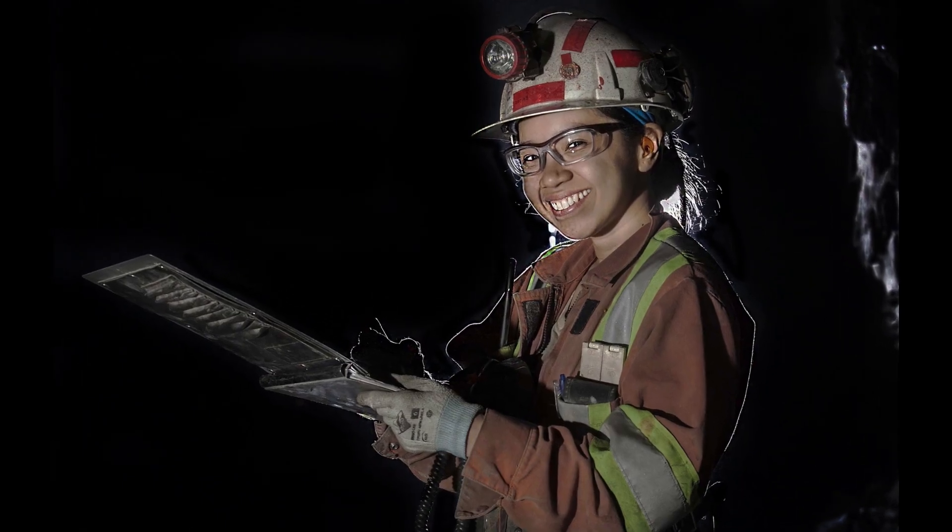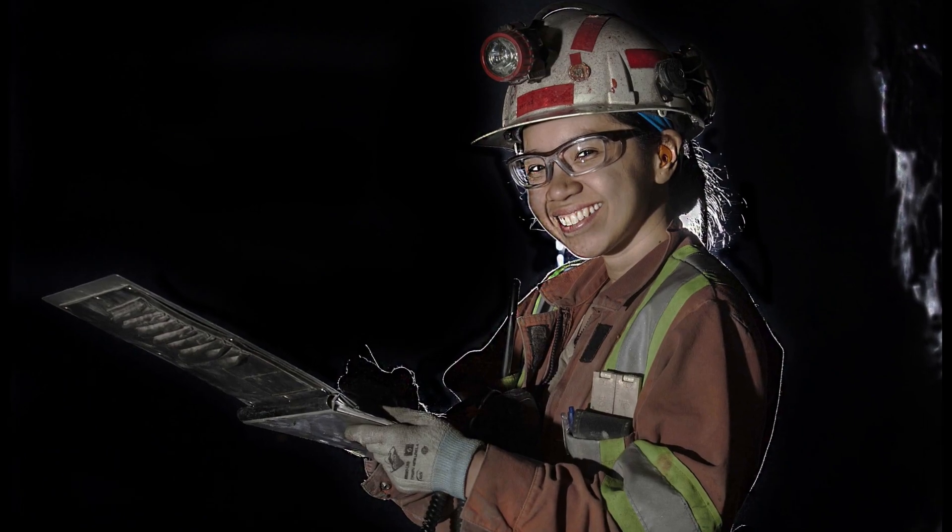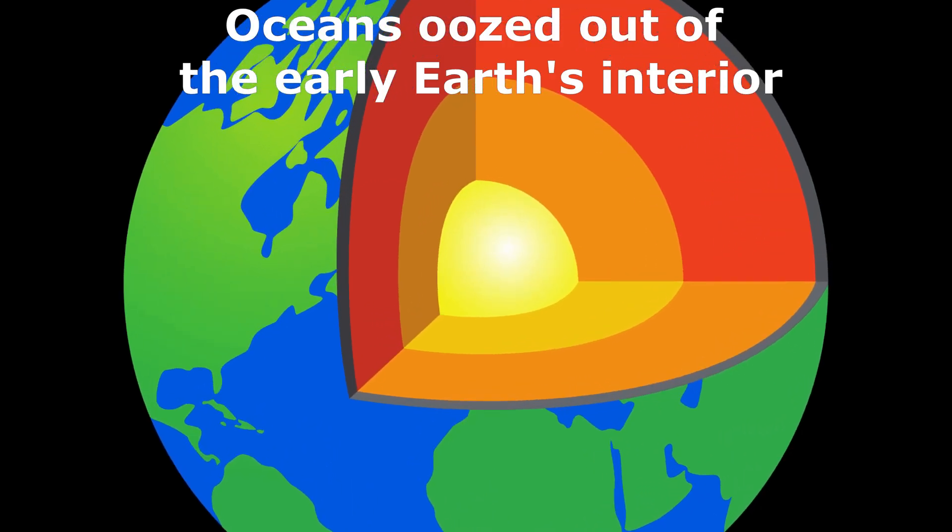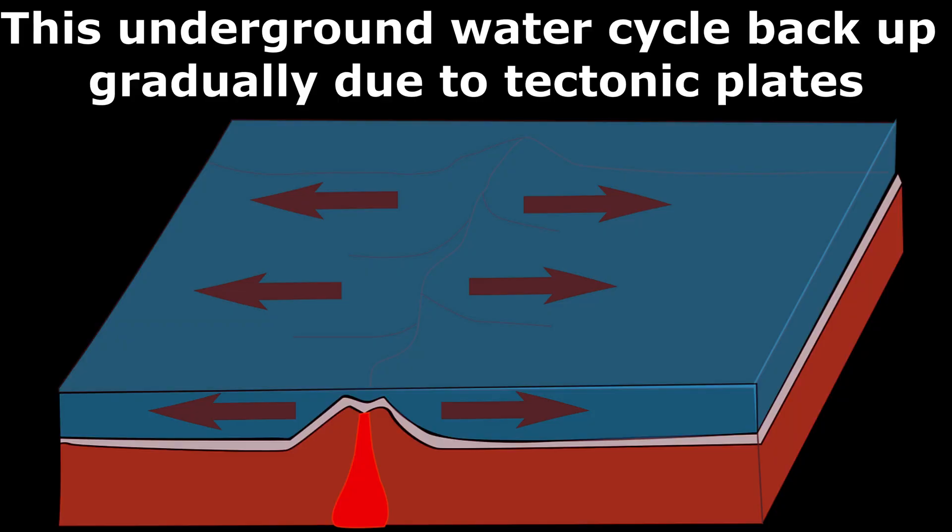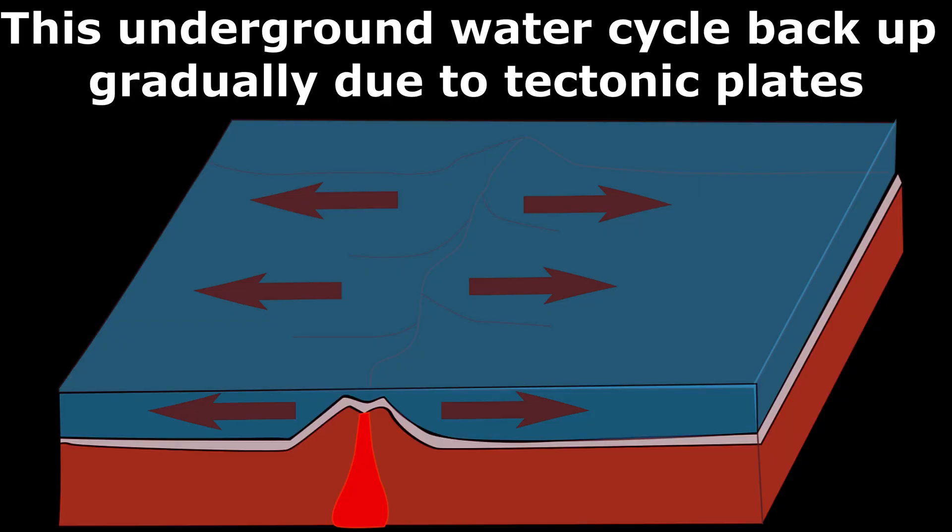But after this new discovery, scientists suggest actually oceans oozed out of the early Earth's interior. This underground water cycle backed up gradually due to tectonic plates.